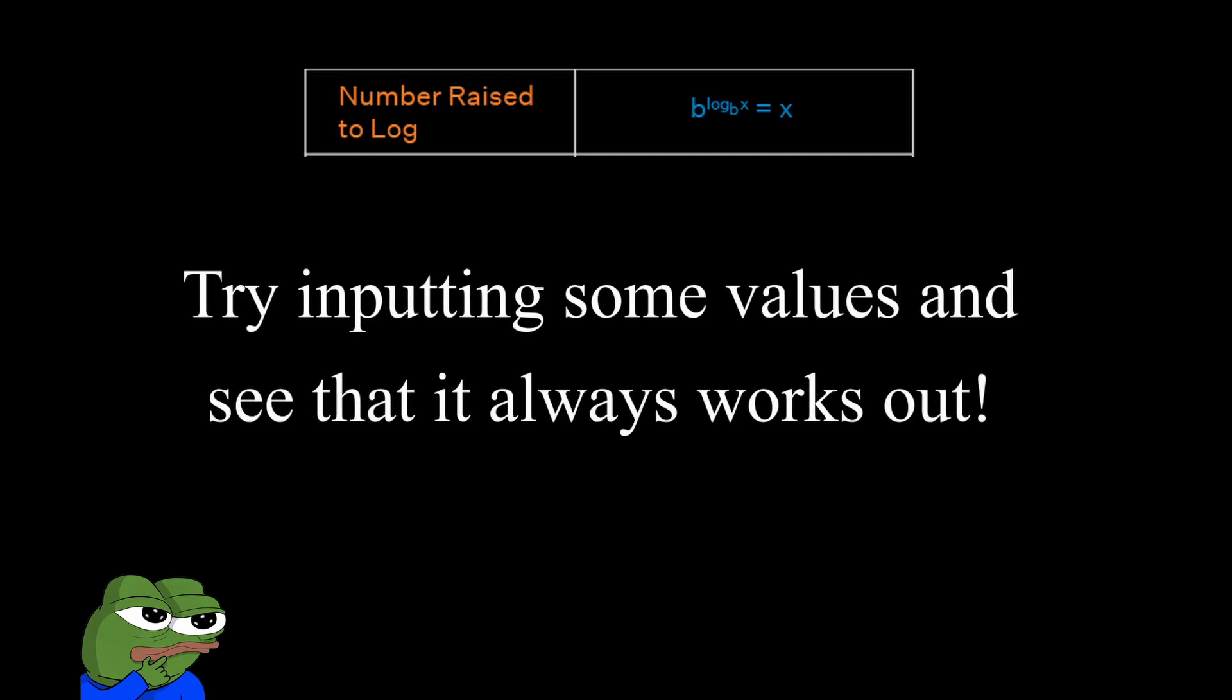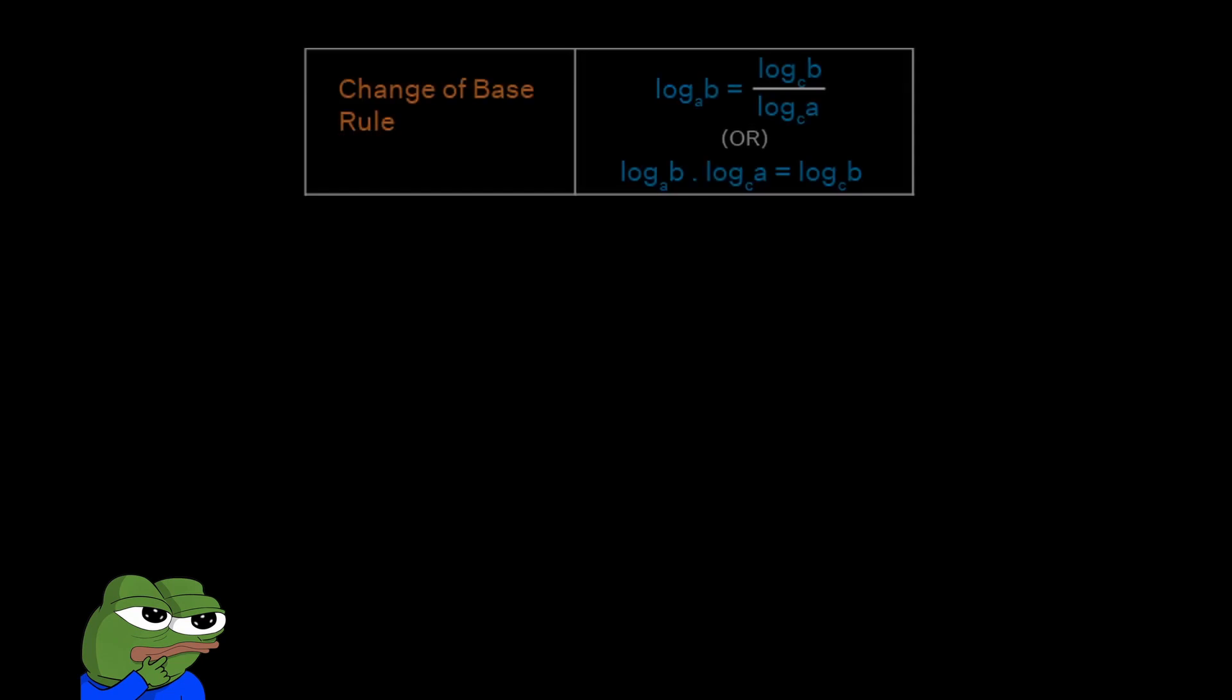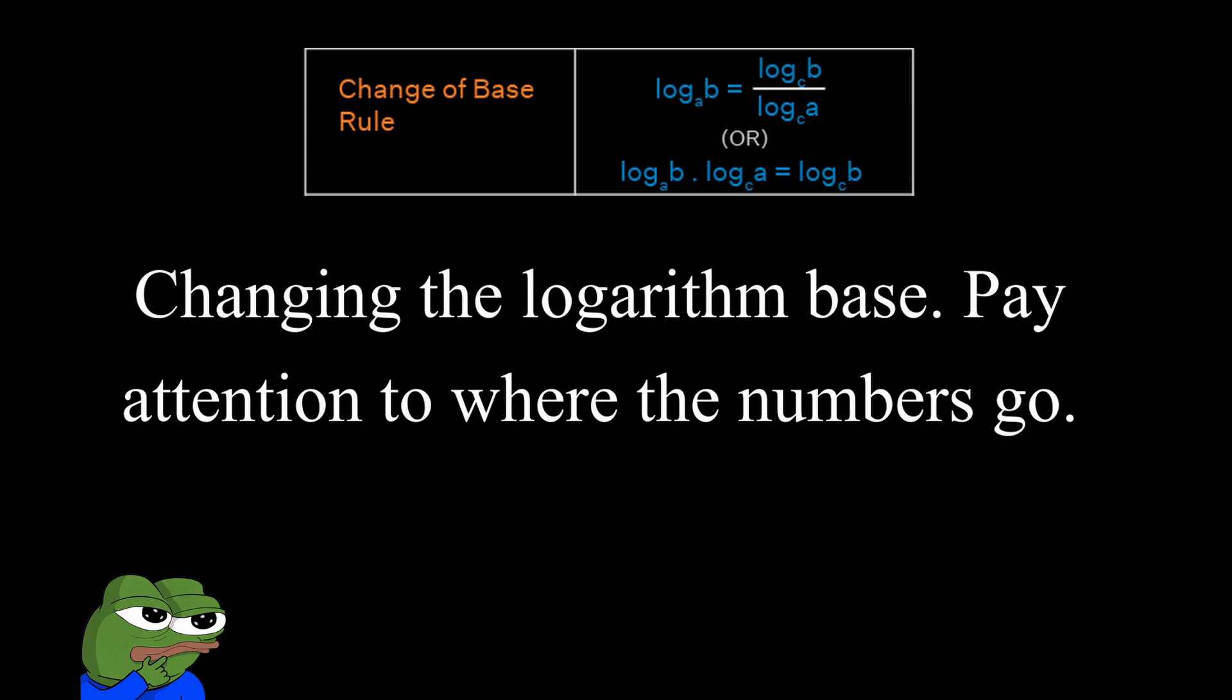Now, what about if you have a number raised to a logarithm? So for example, you have b raised to log base b of x. Well, this is actually simply equal to x. Finally, we have our change of base rule. We want to use this when we want to change the base of our logarithm. So log base a of b is simply equal to log base c, which is our new base of b, all over log base c of a.